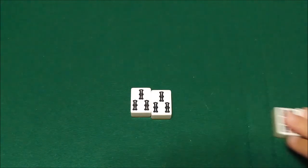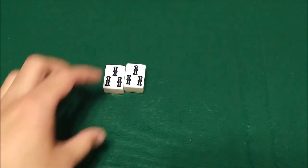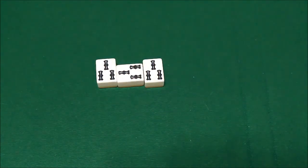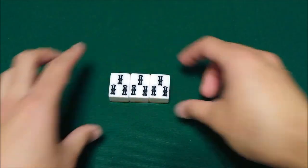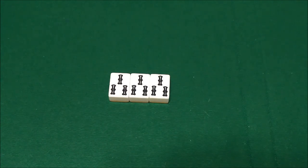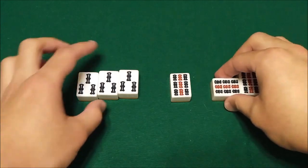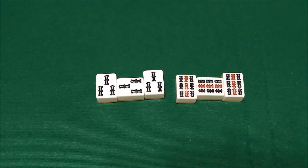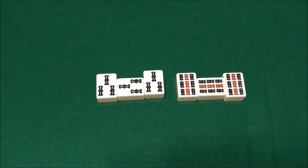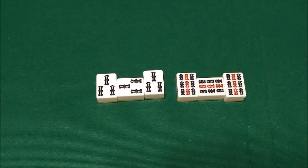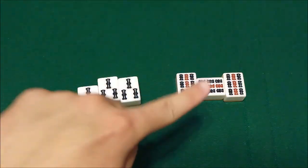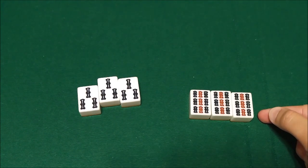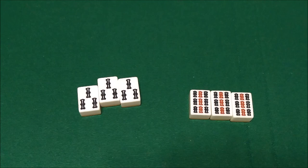The least amount of Fu you can get from a triplet is an open triplet of simple tiles. That's just worth 2 Fu. However, if it's closed, meaning that you had the triplet in your hand already, that is worth 4 Fu. For terminal or honor tiles, they're worth double. So an open triplet of simples is worth 2, but an open triplet of terminals or honors is worth 4. If it's closed, you double it. Or if it's terminals or honors, you double it. If it's a closed triplet of terminals, it's worth 8. It's just all multiples of 2.